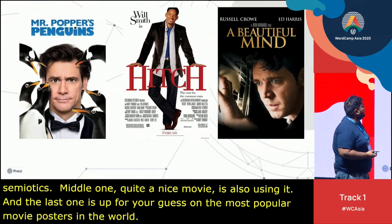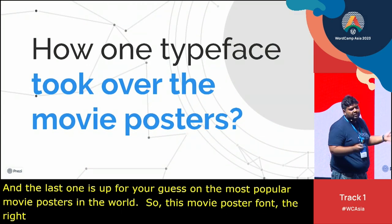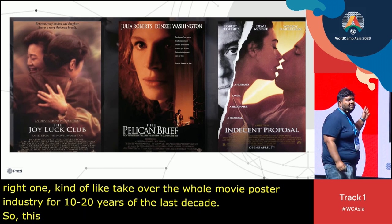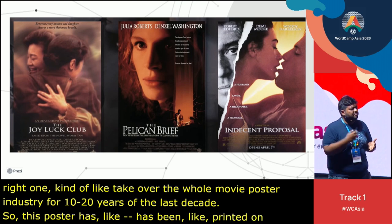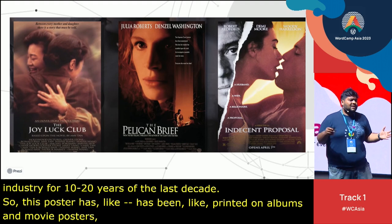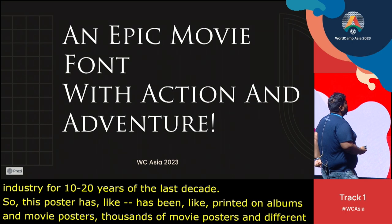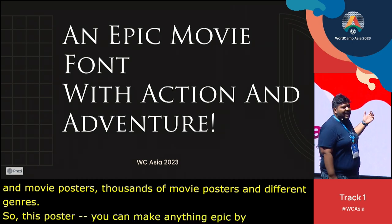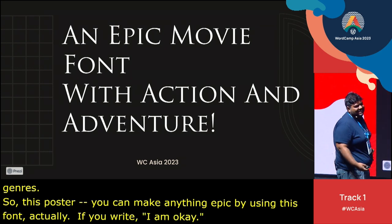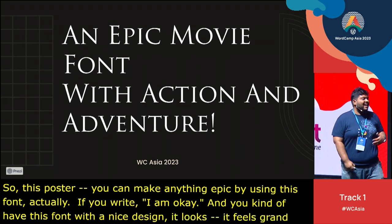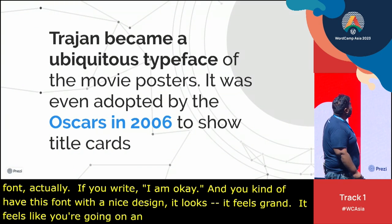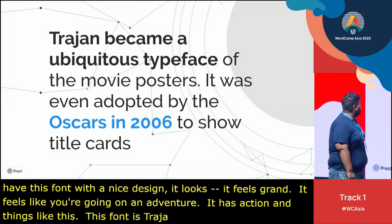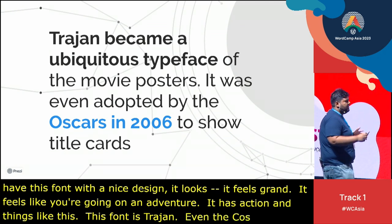This movie poster font — the right one — kind of took over the whole movie poster industry for the last 10 to 20 years. It's been printed on thousands of movie posters across different genres like sports, action, and adventure. You can make anything feel epic using this font. If you write 'I am okay' with this font and a nice design, it feels grand, like you're going on an adventure. This font is known as Trajan, and it was chosen by the Oscars in 2006 to show their title cards.